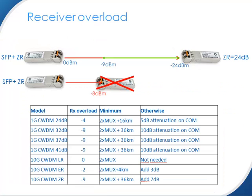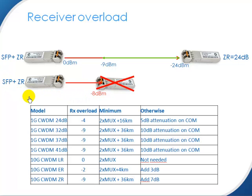Another important thing is the receiver overload. For example, the SFP Plus ZR has to receive light between minus 9 and minus 24 dB. If it receives more than minus 9 — let's say minus 8 — you can damage the receiver, which will mean that the lifetime of your SFP 10 GB ZR goes down. So you cannot use it for years and years; it will just damage it. That's also true for other optics. We can help you calculate that as well.